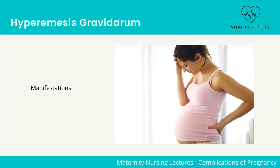Manifestations of hyperemesis gravidarum include loss of 5% or more of pre-pregnancy body weight, dehydration which causes ketosis and constipation, nutritional deficiencies, and metabolic imbalances.